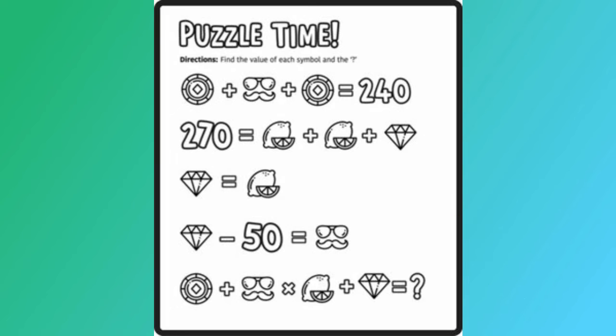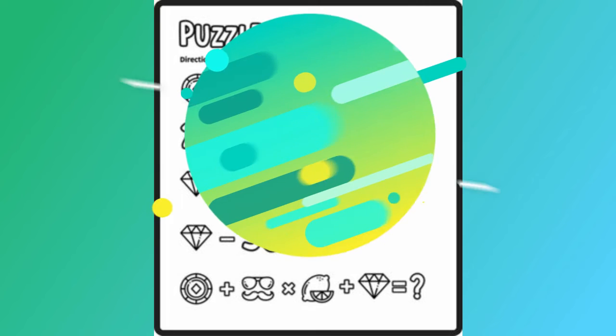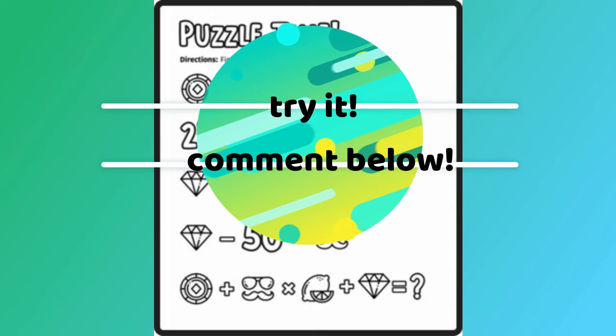You will then add the poker chip, which is 100, and the diamond, which is 90, to get your answer. So if you have not done that yet, I want you to solve that now and comment below in our comments today.